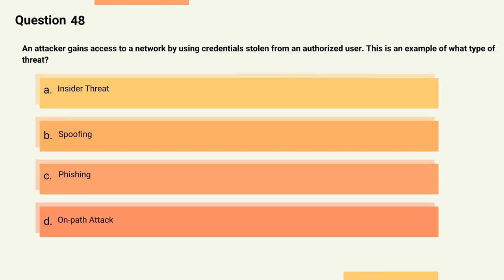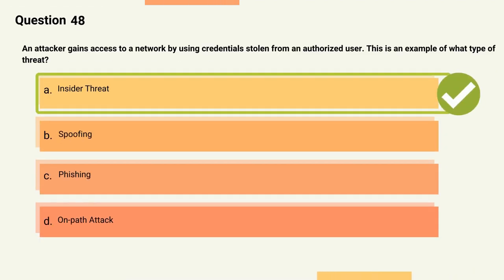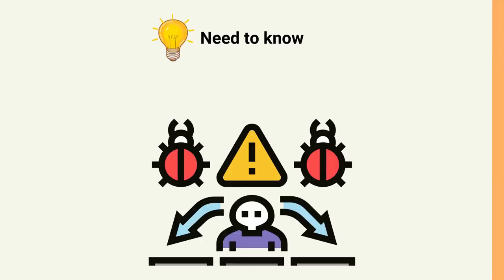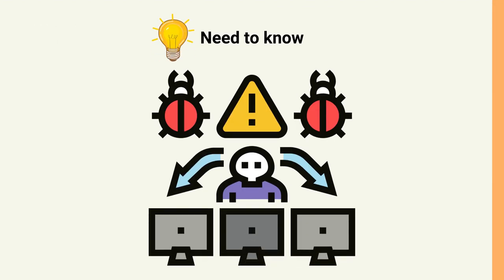Question 48: An attacker gains access to a network by using credentials stolen from an authorized user. This is an example of what type of threat? Options: A) Insider threat, B) Spoofing, C) Phishing, D) On-path attack. The correct answer is Option A, Insider threat. Explanation: The attacker is using legitimate credentials to gain access to the network, which they obtained through illegitimate means.